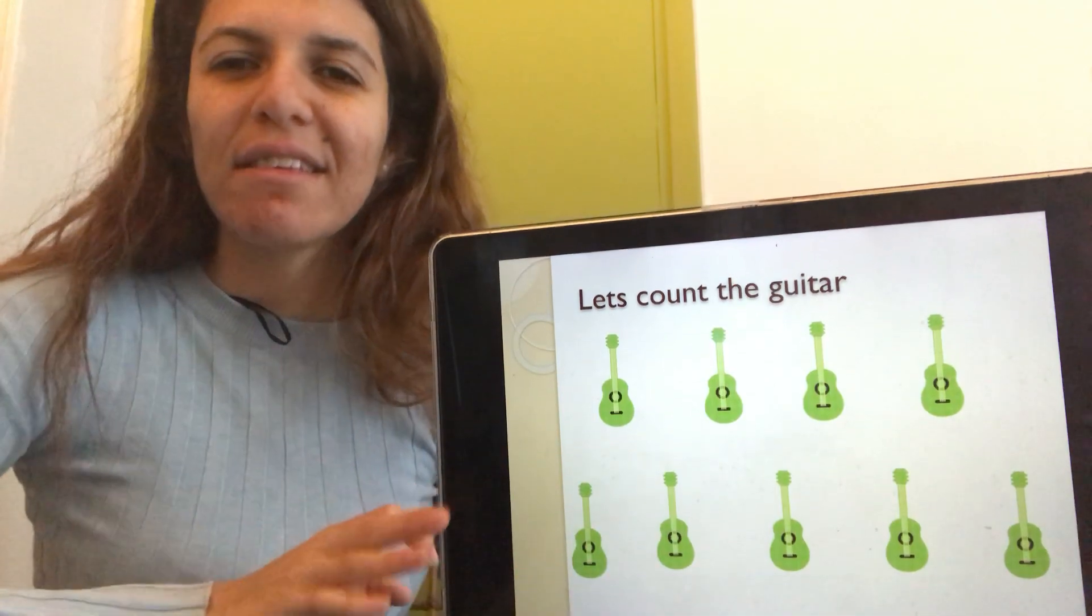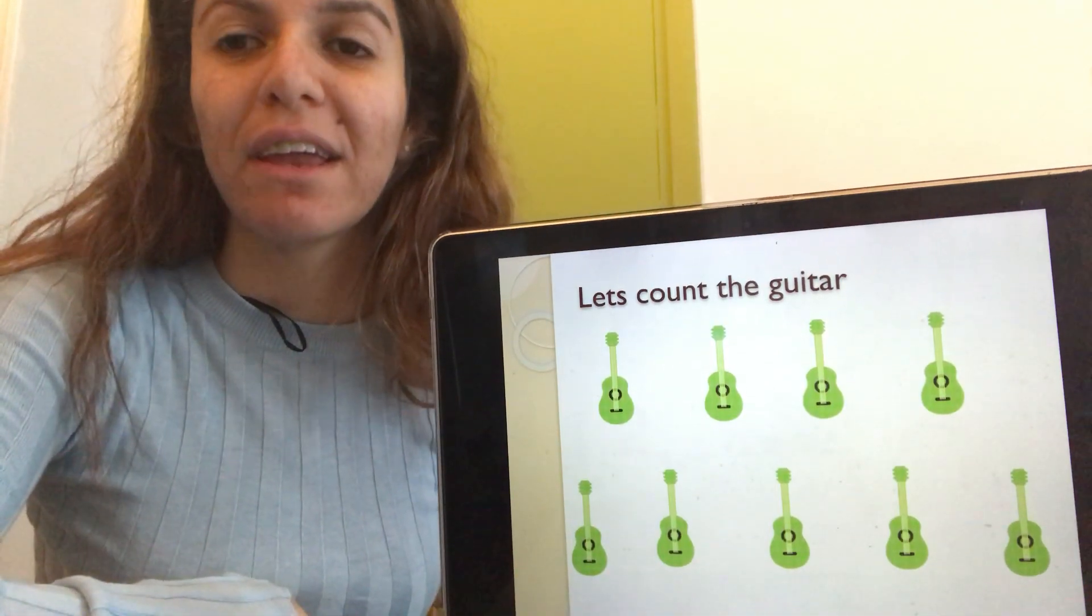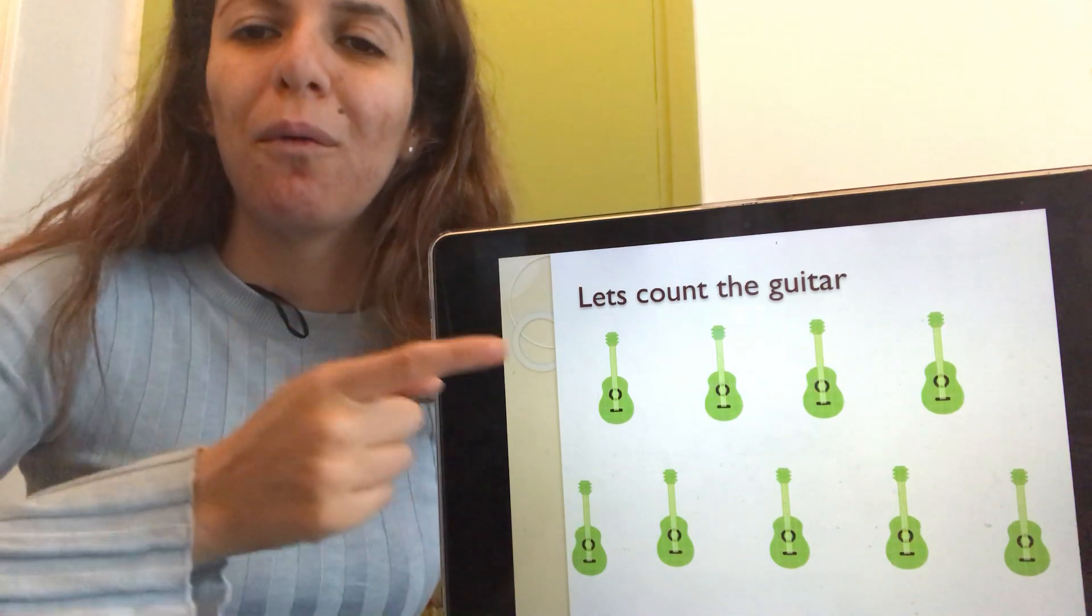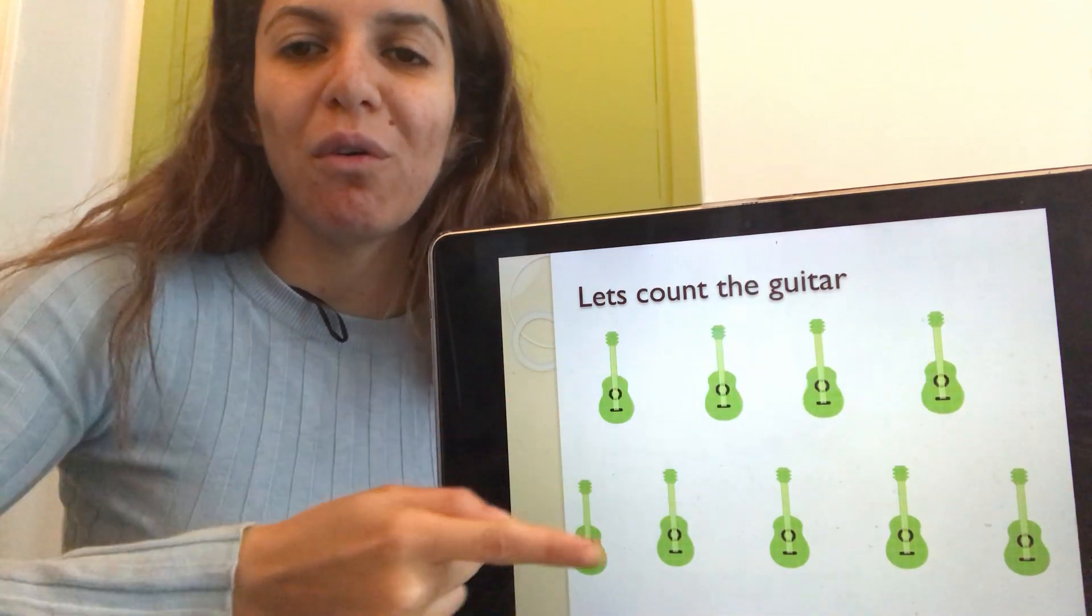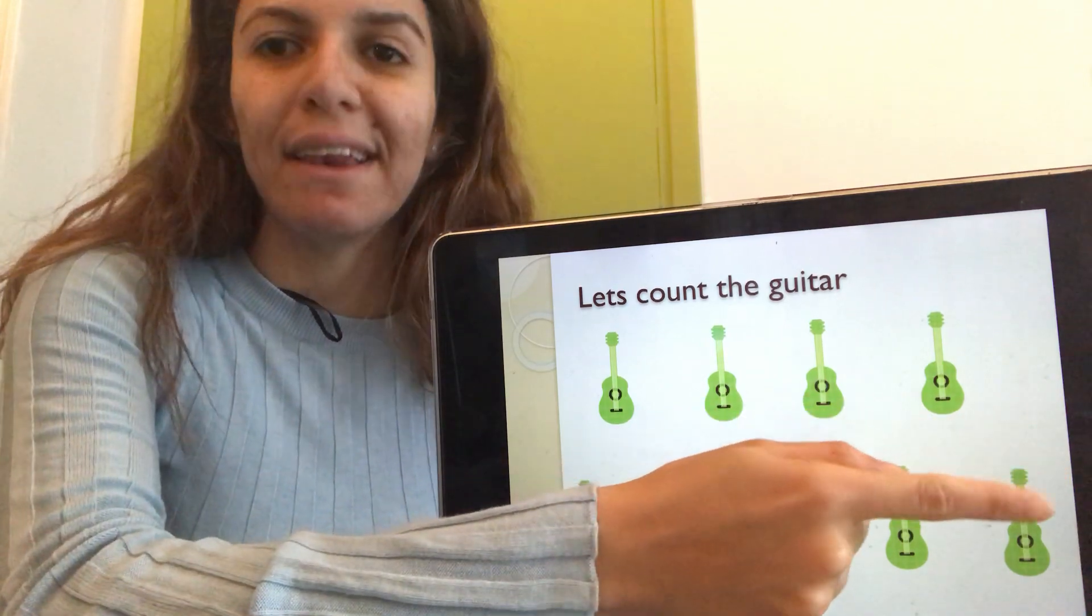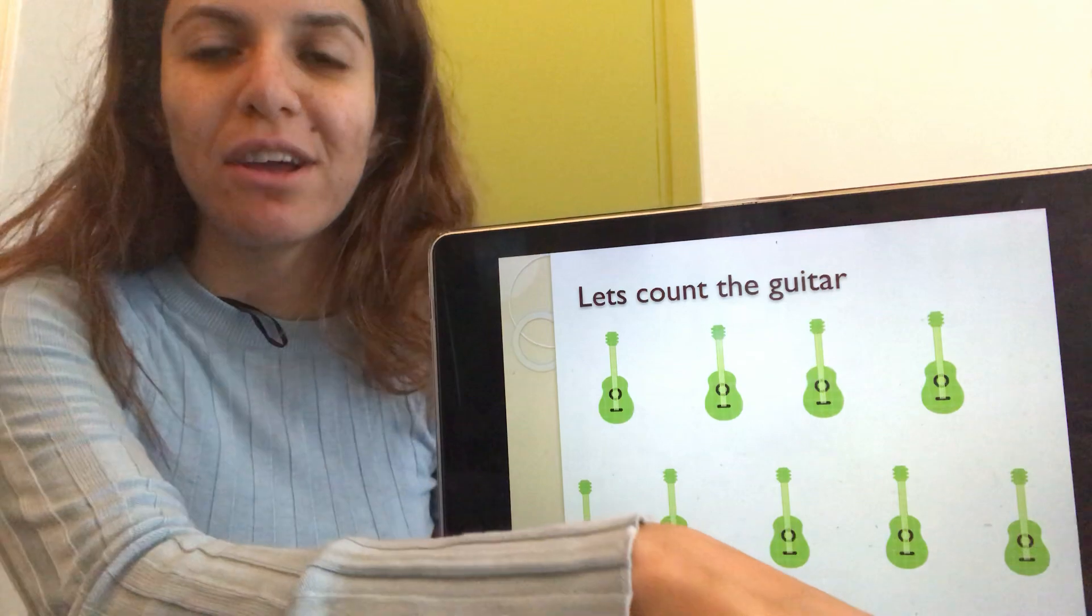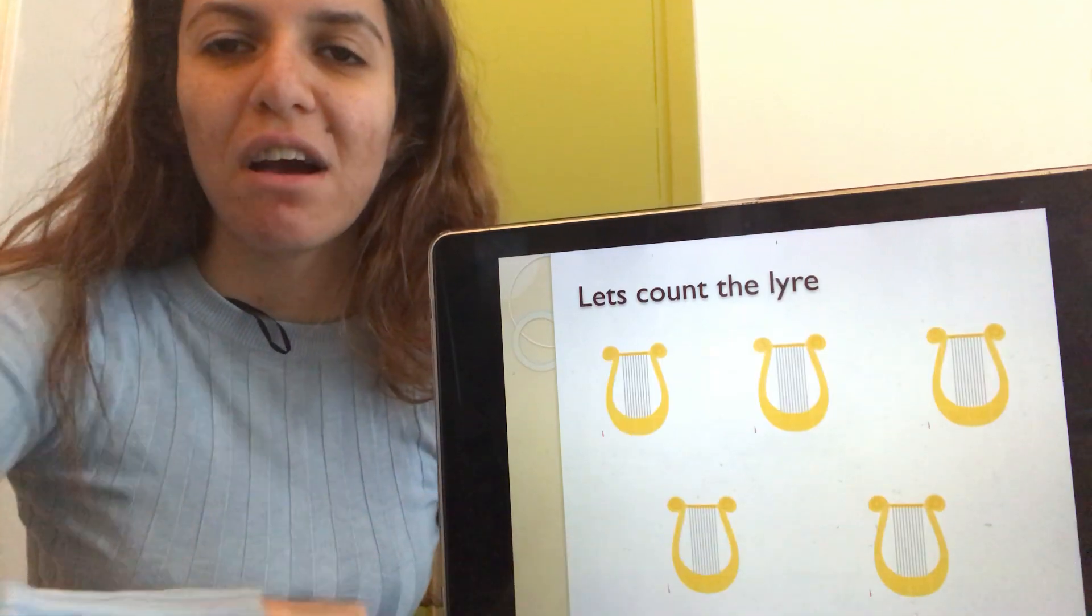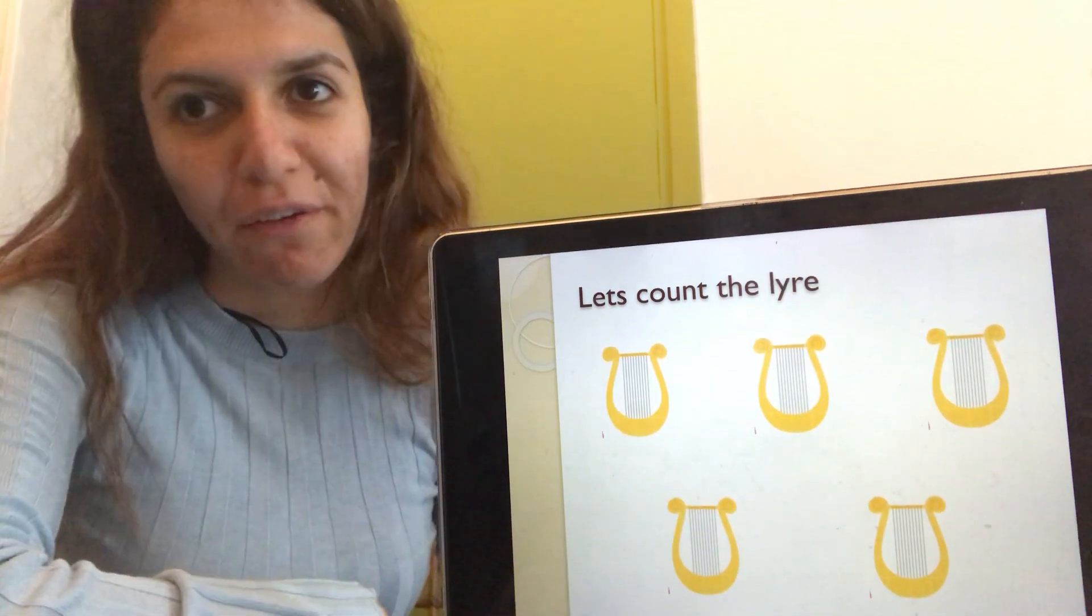And let's count the green guitars. One, two, three, four, five, six, seven, eight, nine. Very good. Nine green guitars. You're very good at counting.